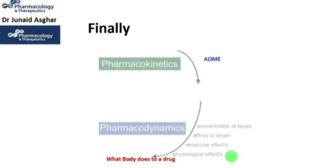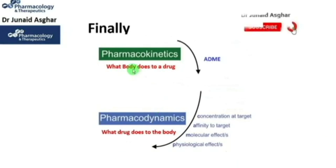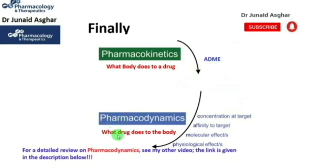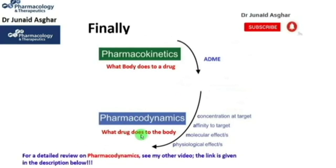Finally, pharmacokinetics is what the body does to a drug in terms of its absorption, distribution, metabolism, and excretion, whereas pharmacodynamics is what the drug does to the body — in terms of its concentration at the target site, its affinity to the target, and its molecular, physiological, or pharmacological actions.